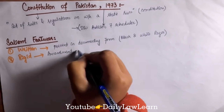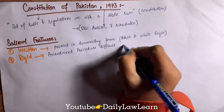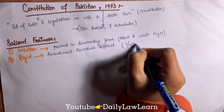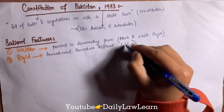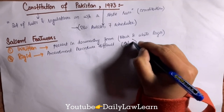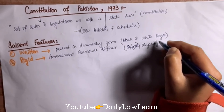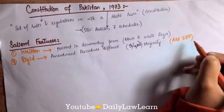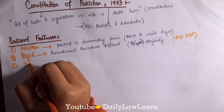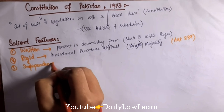Number two is rigid. The Constitution of Pakistan is rigid, meaning the amendment procedure is very difficult. A two-third majority of parliament is required to amend the constitution, according to Article 239 of the Constitution of Pakistan 1973.